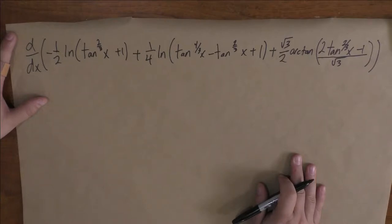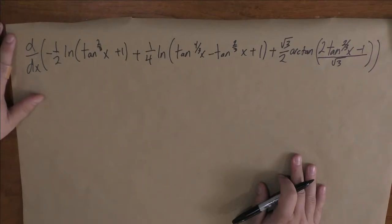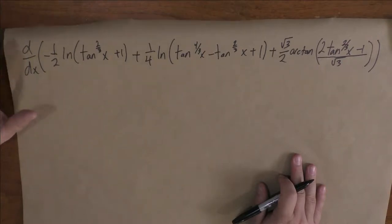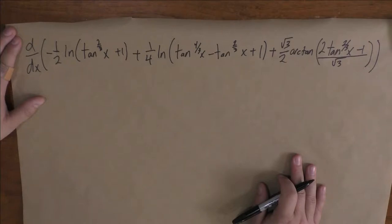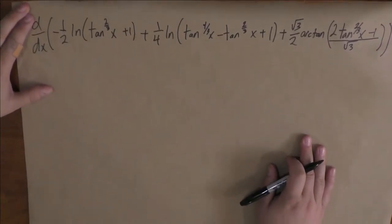This problem is actually more of an algebraic mess than it is a problem for the calculus side of it. Anyway, we'll just go ahead and differentiate here. There are three different terms here and they're all complex. We're going to have to apply the chain rule a couple of times in each one, and this is going to give an absolutely dreadful expression.